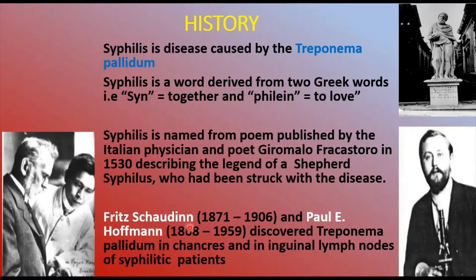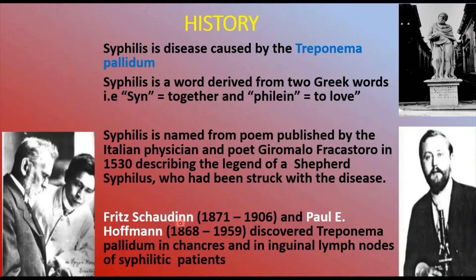Fritz Schaudinn (1871–1906) and Paul Erich Hoffmann (1868–1959) discovered Treponema pallidum in the chancres and inguinal lymph nodes of syphilitic patients. These were the people who first identified Treponema pallidum.